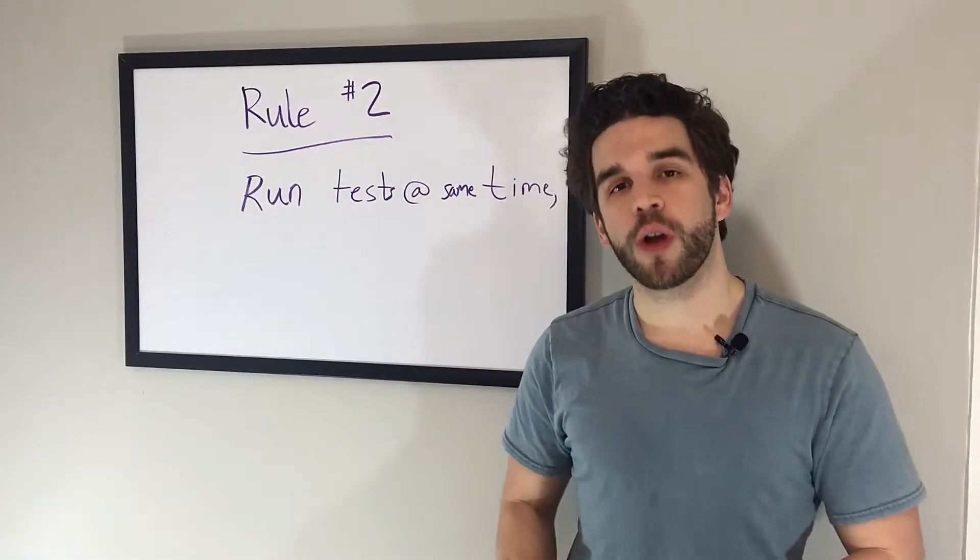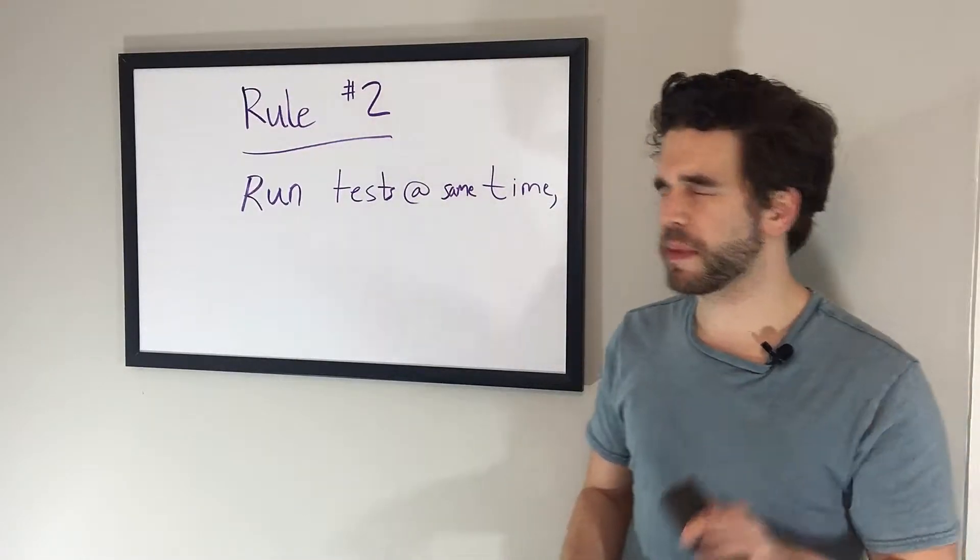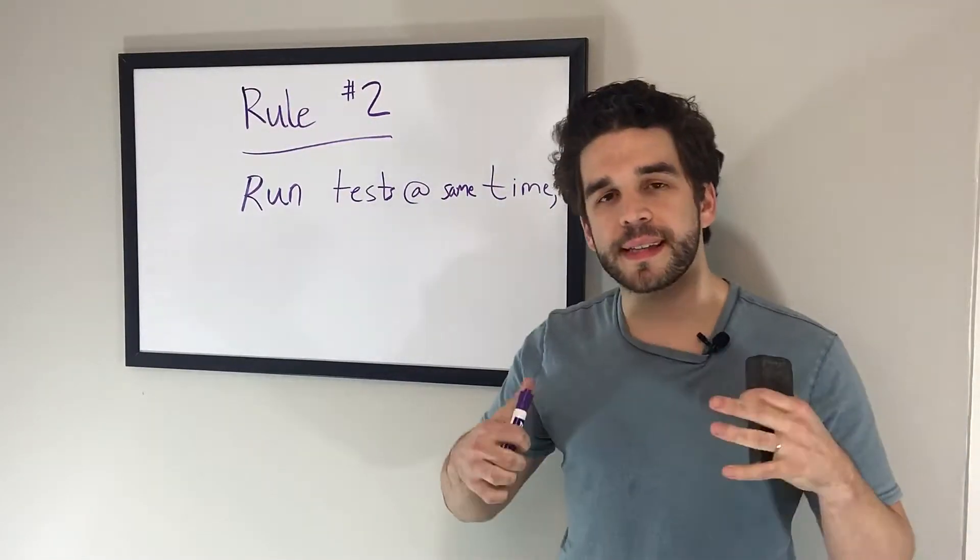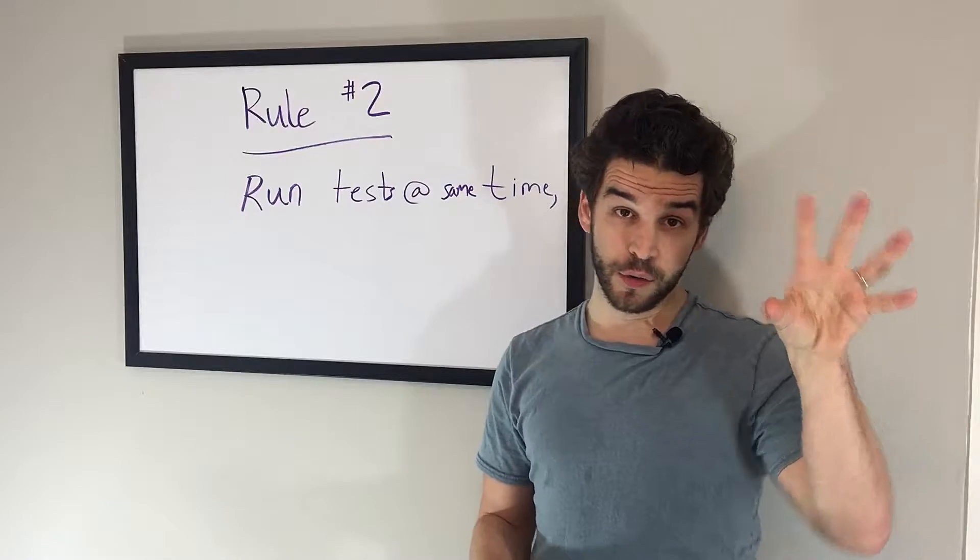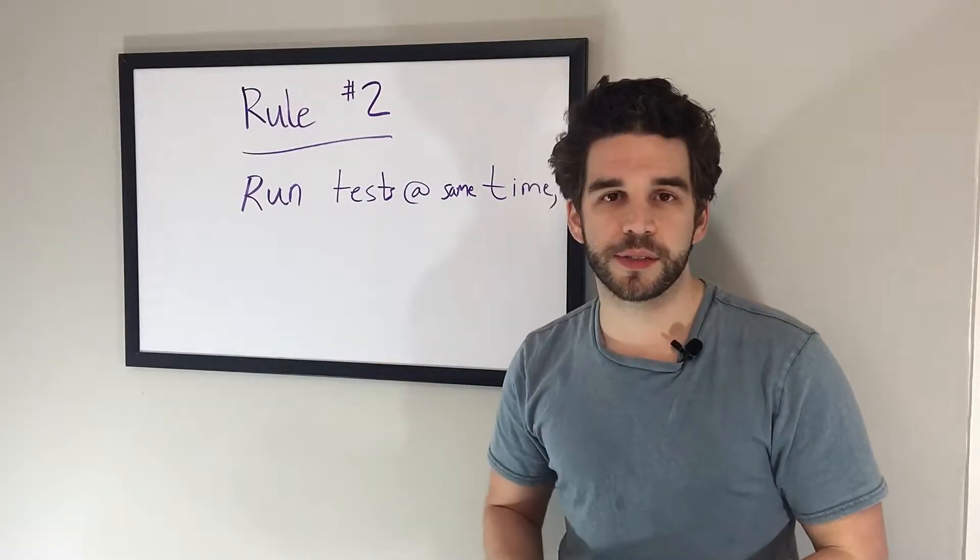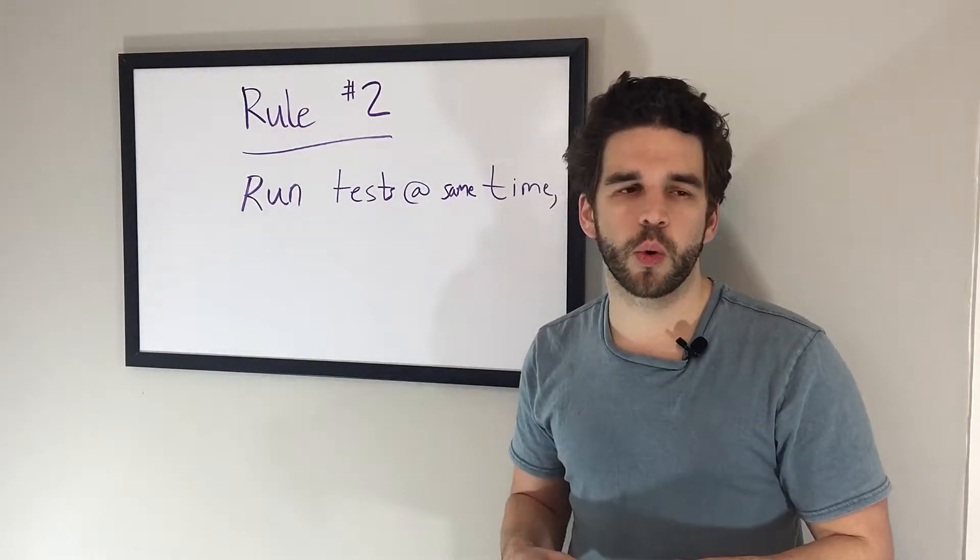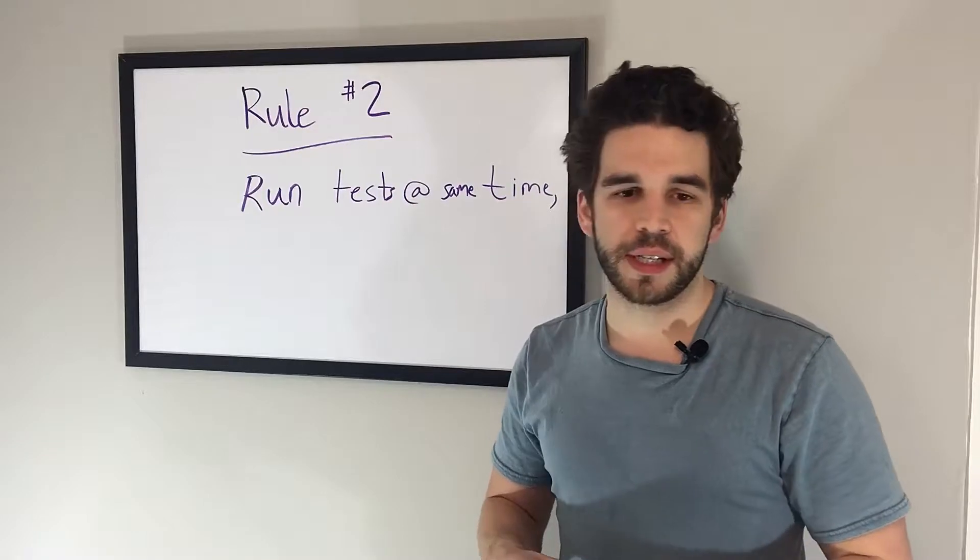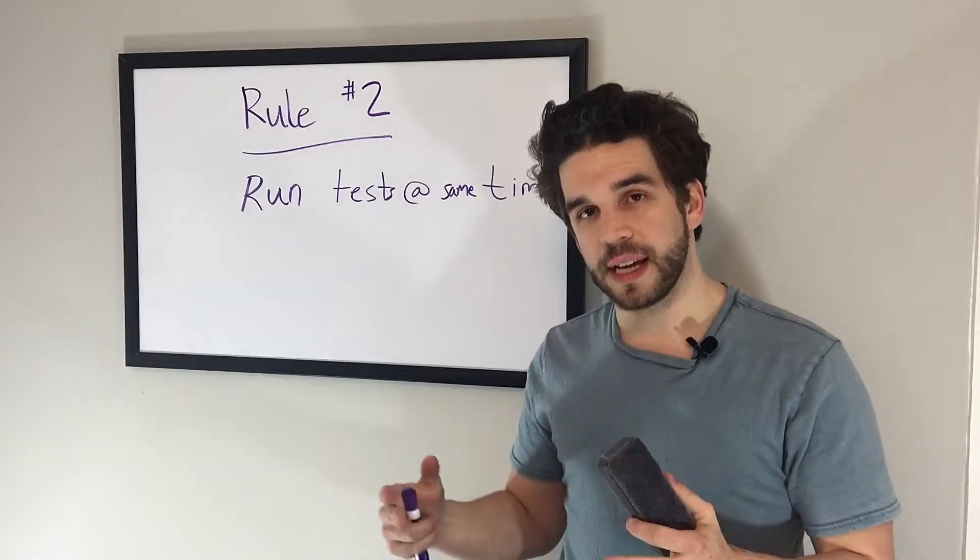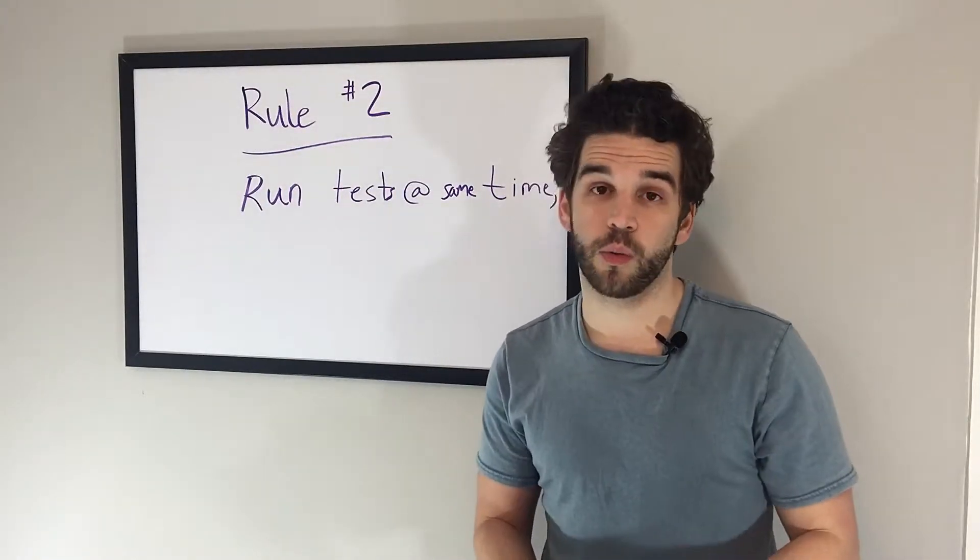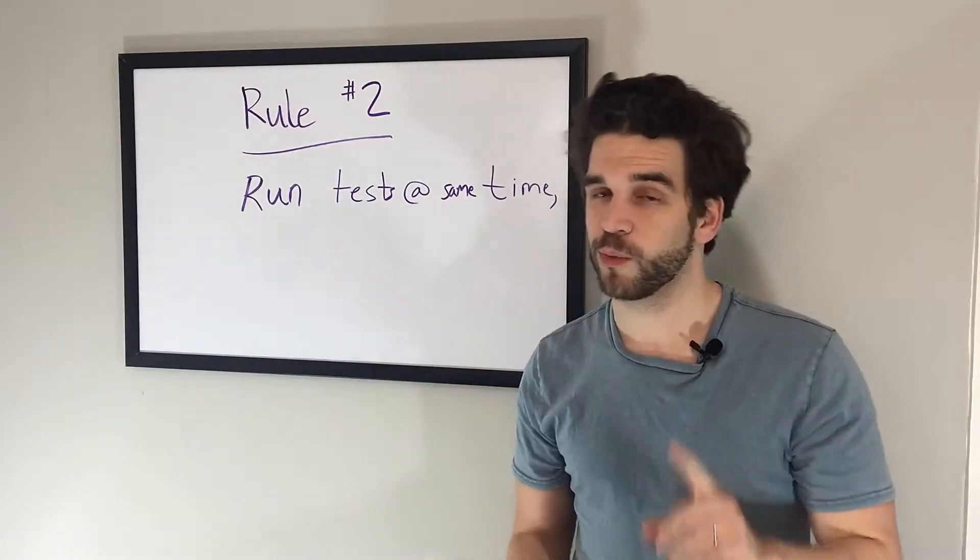Rule number two, run the test at the exact same time. So don't let that fool you from rule number one. Here's what I mean by that. If you're going to test the headline of a landing page, don't run test A in November and then test B in December. Because you're dealing with different months. In December, people are going to be buying a lot more, or they might be traveling and responding differently to ads than they would have. So when you do your test, split it at the same time. Meaning that when a page is loaded once, it shows this. When it's loaded the next time, it loads option B.